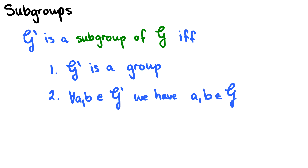In this video we'll introduce subgroups, semigroups, and monoids. So let's start with subgroups. We say that g' is a subgroup of g if g' is a group and for every two elements in g' we have those same elements in g. It's kind of similar to the subset relationship except we're talking about whole groups.